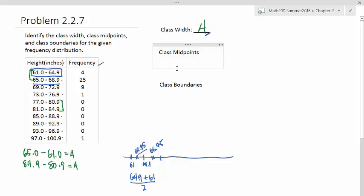And so your class midpoints are going to be 62.95. Now the next one we got was 66.95. If you notice, we got 66.95 by adding 4 to this, or that would be another way to do this. So if we can just continue to add 4, we can get all the class midpoints. So we need 10 of them.